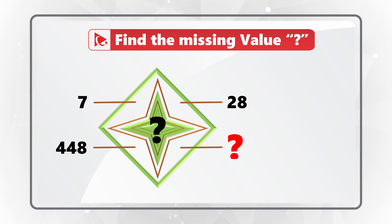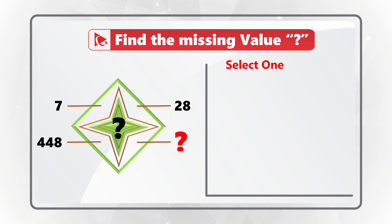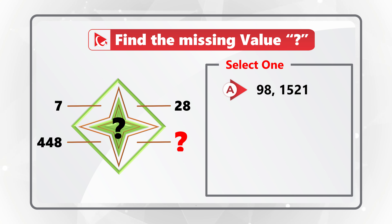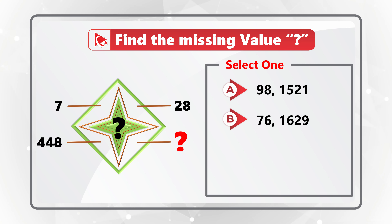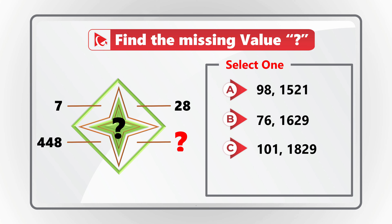You have four different choices for the final value. Choice A: 98 and 1521. Choice B: 76 and 1629. Choice C: 101 and 1829. And last but not least, Choice D: 112 and 1792.